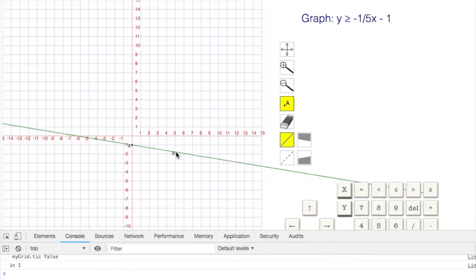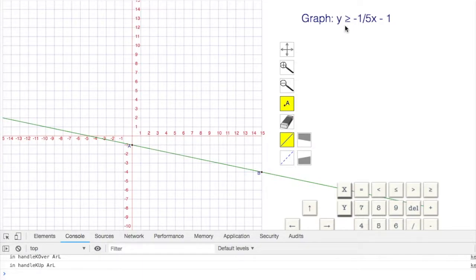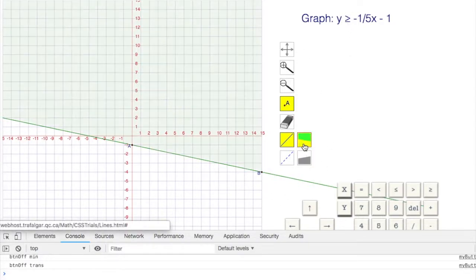Any of those points would do. So if we went over 15 and down 3, same thing, right? Over 5, down 1. y is greater than or equal to, so it's a solid line. And greater than, we're shading above.